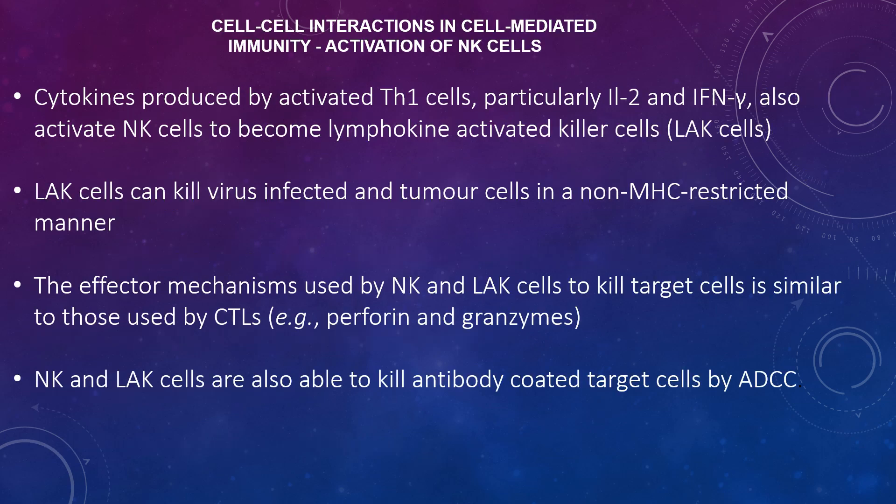Cytokines produced by activated Th1 cells, particularly IL-2 and interferon gamma, also activate natural killer cells to become lymphokine-activated killer cells, or LAK cells. LAK cells are able to kill virus-infected and tumour cells in a non-MHC-restricted manner. The susceptibility of target cells to killing by natural killer cells and LAK cells is inversely proportional to the expression of MHC class 1 molecules. The effector mechanisms used by natural killer cells and LAK cells to kill target cells are similar to those used by CTLs, such as perforin and granzymes. Natural killer cells and LAK cells are also able to kill antibody-coated targets by ADCC.